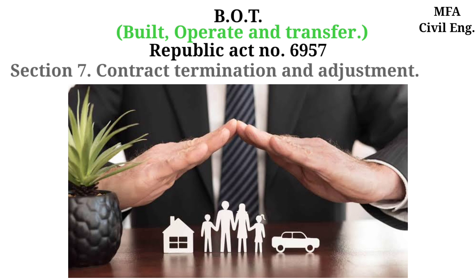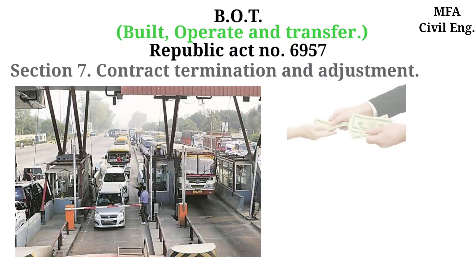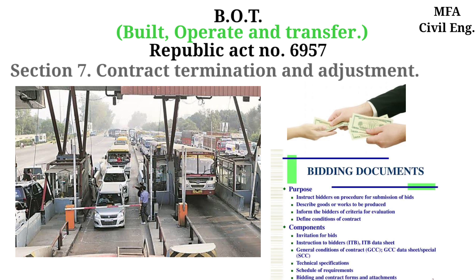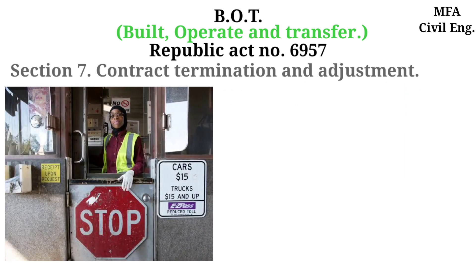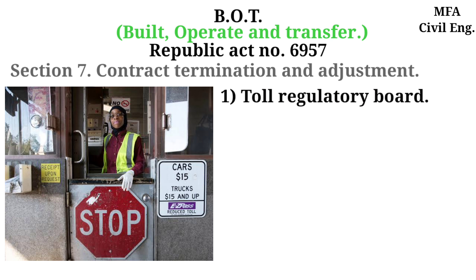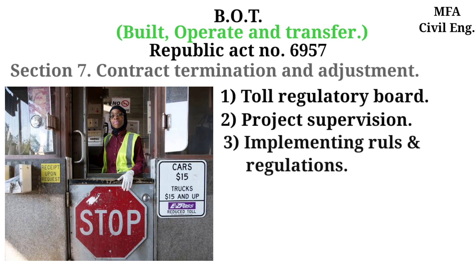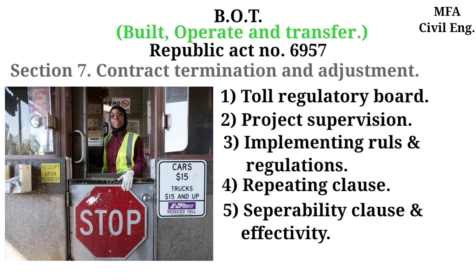Cost of insurance coverage shall be included in the terms and conditions of the bidding. The tolls, fees, rents, and charges on the facility are subject to adjustment according to a formula related to official government pricing indices, which shall be defined before bidding through the bidding document and incorporated in the contract. Other sections include the Toll Regulatory Board, project supervision, implementing rules and regulations, repeating clause, separability clause, and effectivity, as mentioned in Section 7.